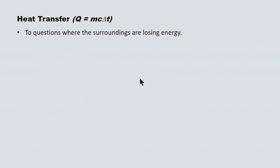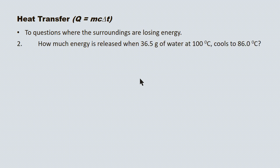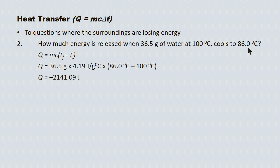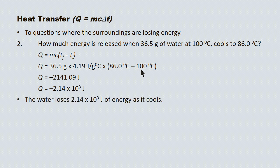Here's a tougher example where the surrounding water doesn't go through an energy increase but loses energy. We see that because the temperature drops from 100 degrees Celsius to 86.0 degrees Celsius. Same approach — start with our equation, substitute in, and come up with a raw value of −2141.09 joules. You'll see that we have a negative value, consistent with the loss of energy of the surroundings. Applying sig digs, Q is −2.14 × 10³ joules. The water loses 2.14 × 10³ joules of energy as it cools.